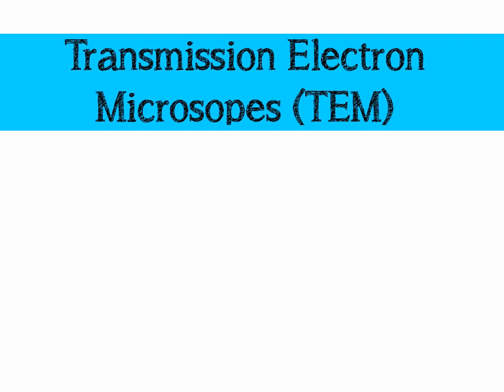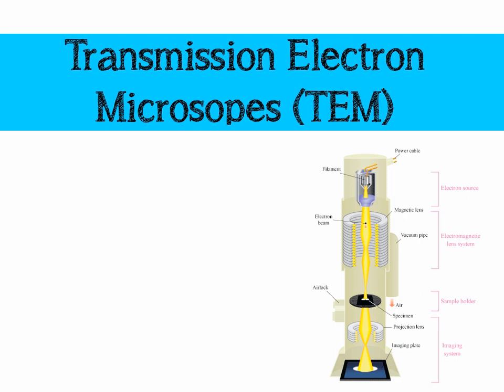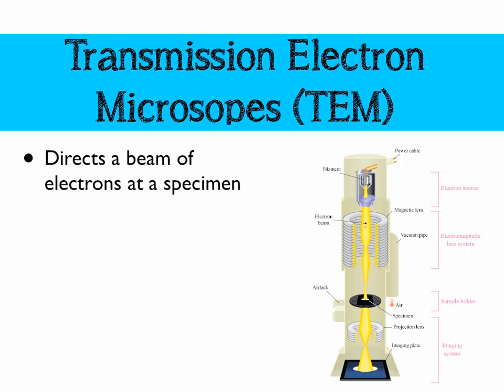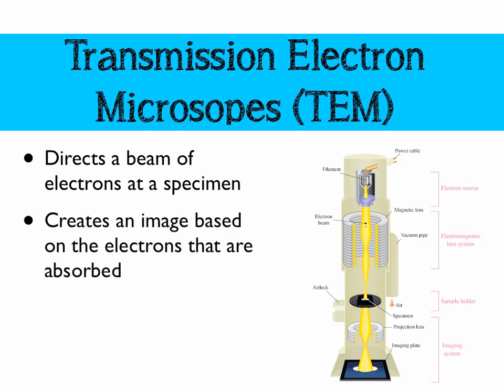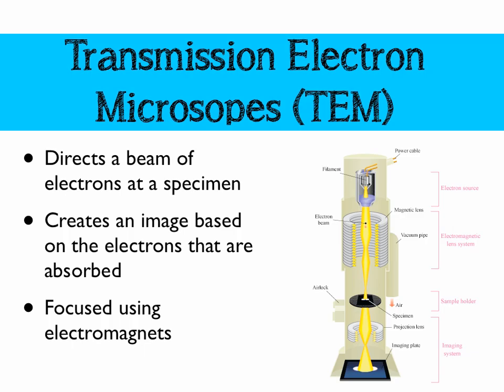The third and final type, and the second electron microscope, is the transmission electron microscope, or TEM. Again, we've got an electron beam being focused with a magnetic lens. This time, our electrons are going to pass through the specimen and onto an imaging plate, which is read by a computer. So, again, a beam of electrons is directed at a specimen and it creates an image based on the electrons that are absorbed — not the electrons reflected back like the SEM. Focusing is taken care of using electromagnets.